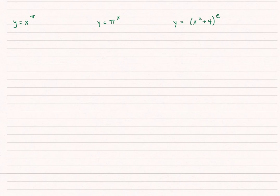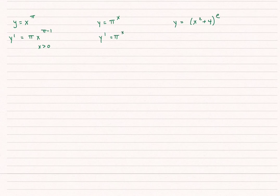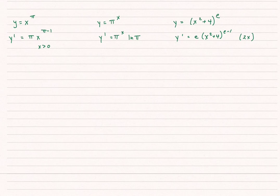Let's do three more examples to show the difference between x to a number versus a number to the x power. First, for y equals x to the pi: y prime equals pi times x to the pi minus 1, using the general power rule, for positive x. Second, for y equals pi to the x — an exponential function — y prime equals pi to the x times natural log of pi. You need to pay close attention to whether x is in the exponent or is the base.